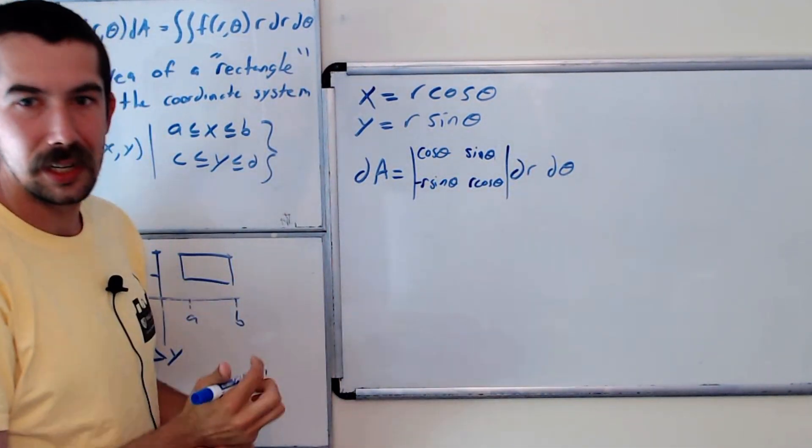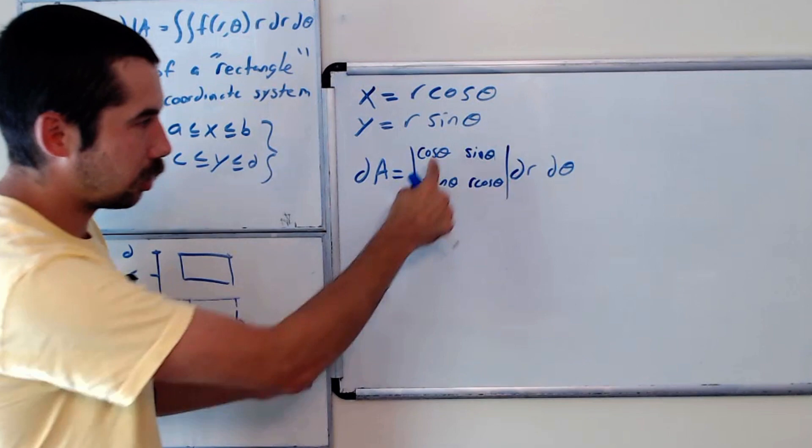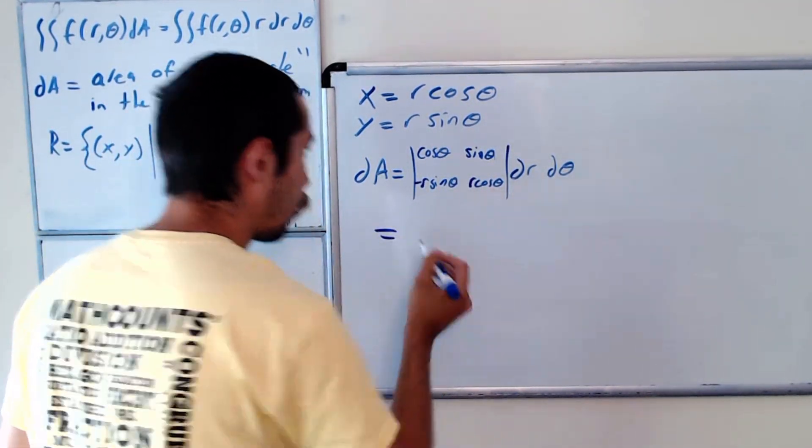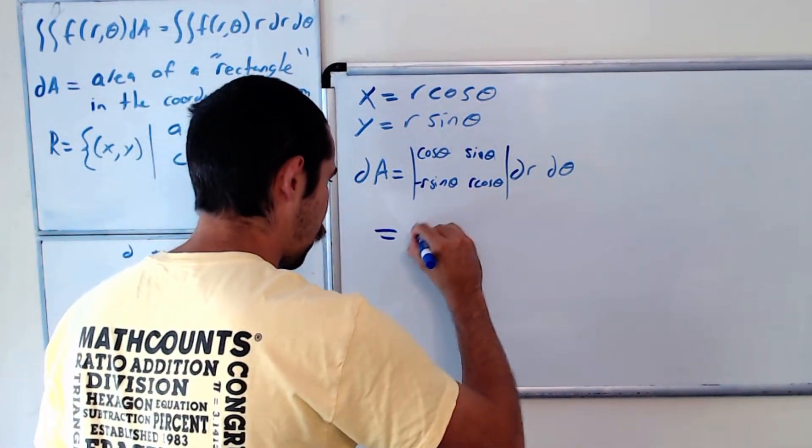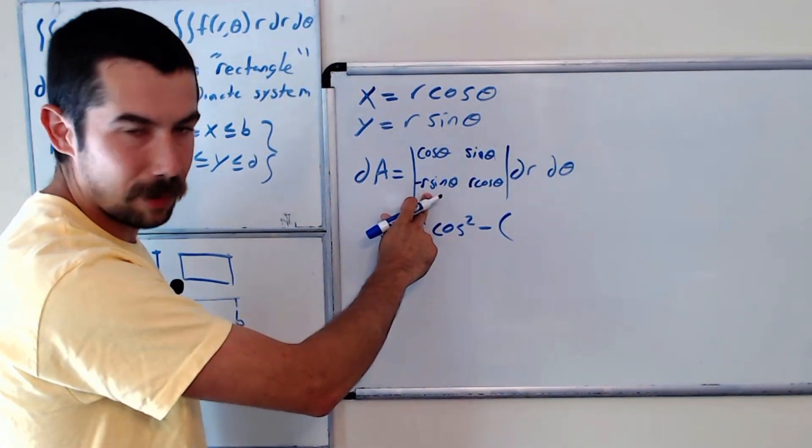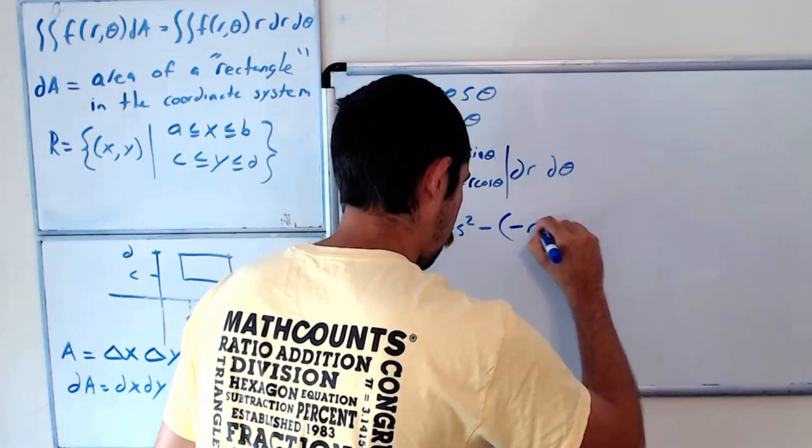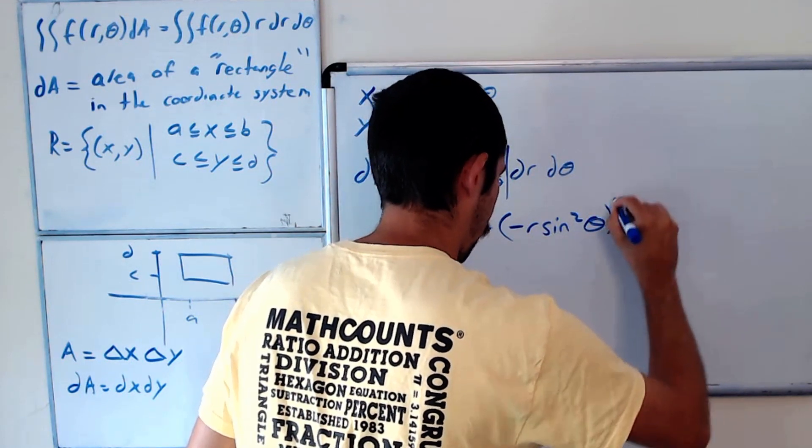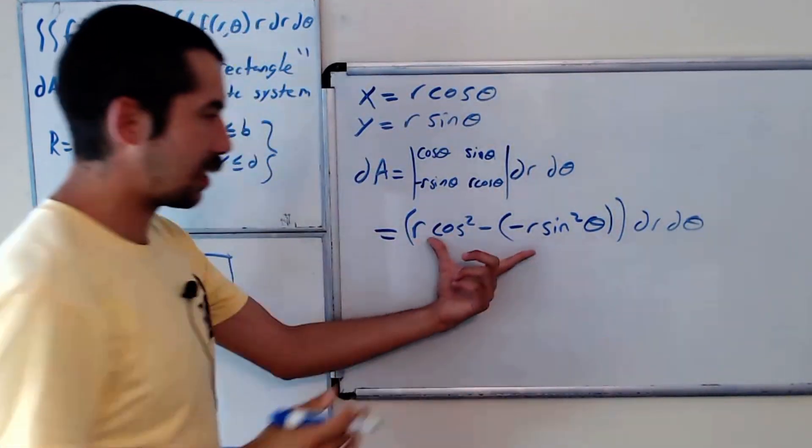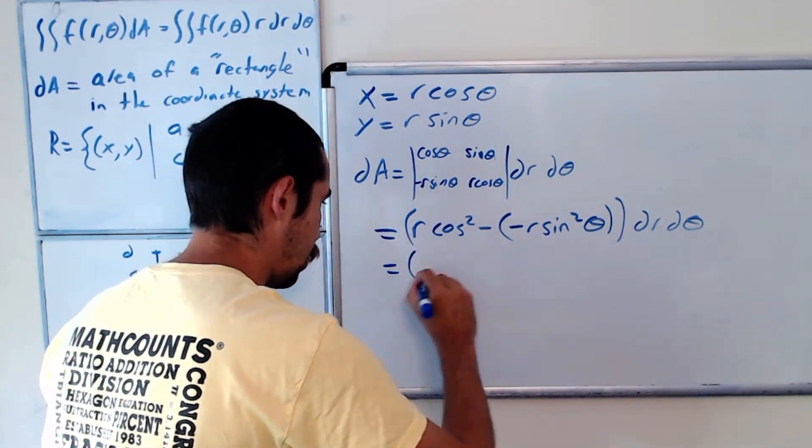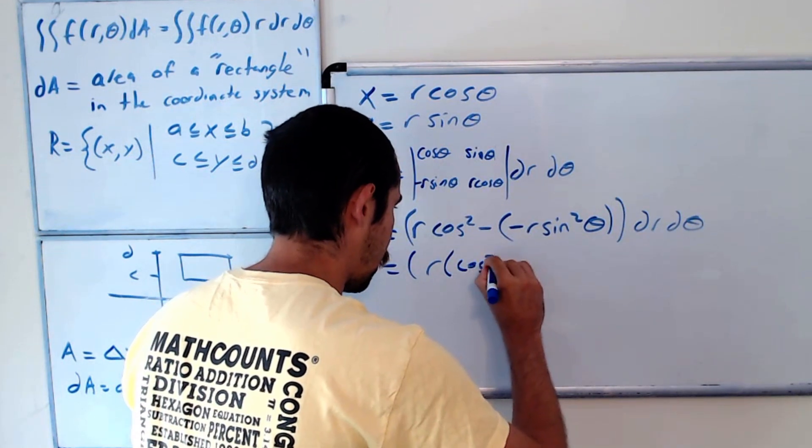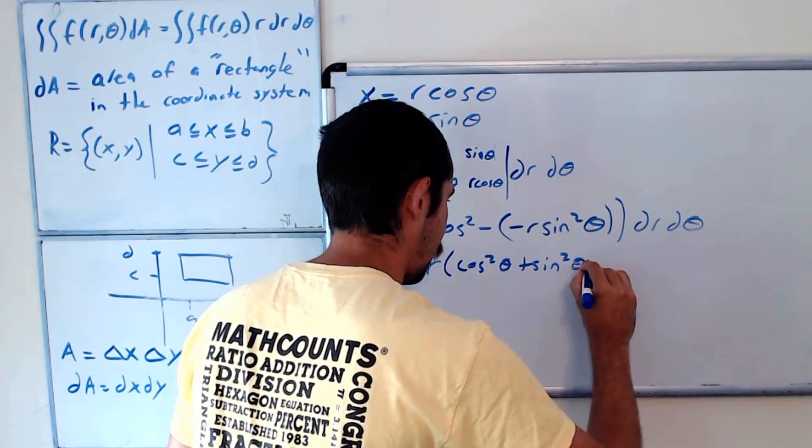And we want to find the determinant of this two by two matrix. So you just go down the main diagonal, subtract off the opposite diagonal. So that's r cosine squared theta minus negative r sine squared theta, still dr d theta. And now we want to simplify this. This is r, right? We could factor out an r: cosine squared theta plus sine squared theta. Well, you know what that is.